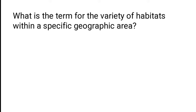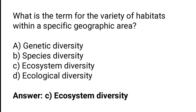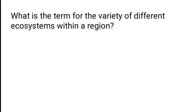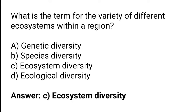What is the term for the variety of habitats within a specific geographic area? A) Genetic diversity, B) Species diversity, C) Ecosystem diversity, D) Ecological diversity. The correct answer is option C — ecosystem diversity is the term for the variety of habitats within a specific geographic area. Similarly, ecosystem diversity is the term for the variety of different ecosystems within a region.